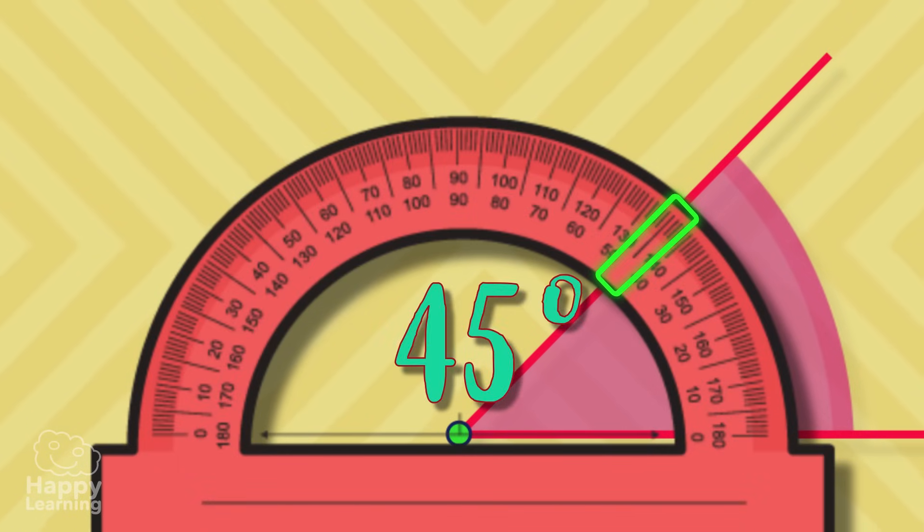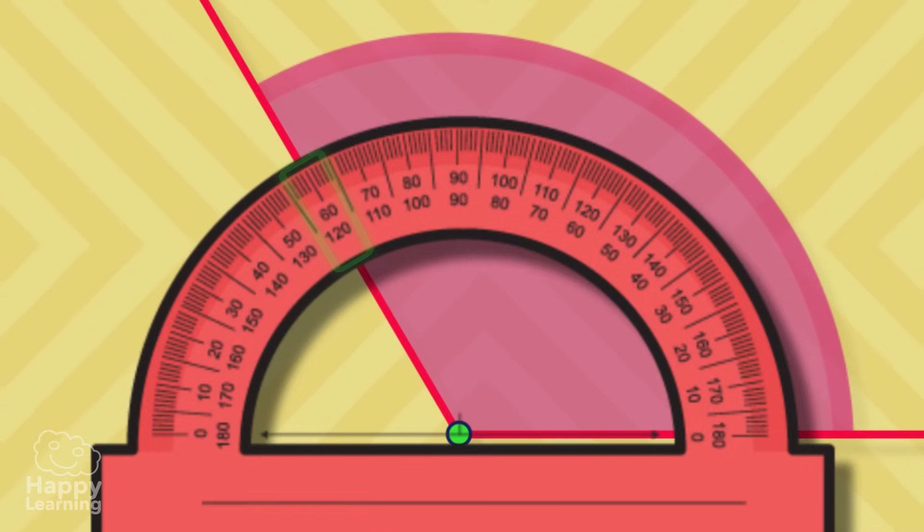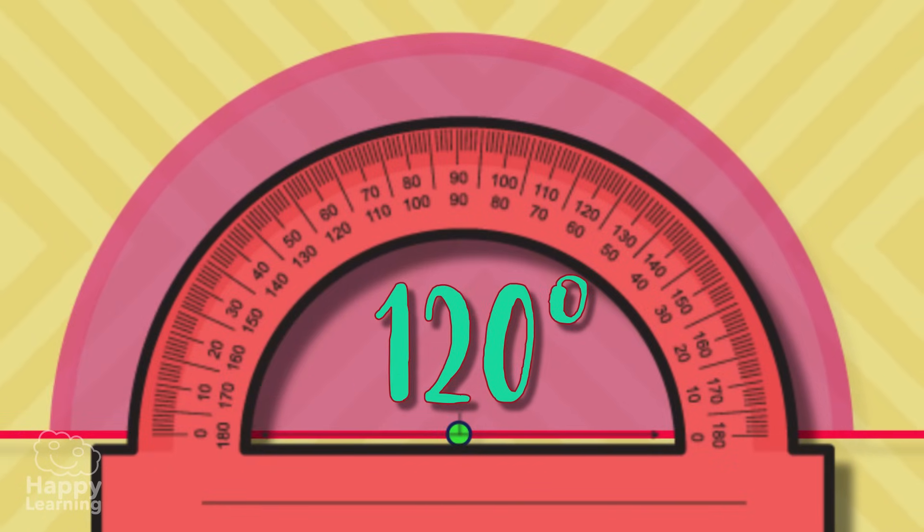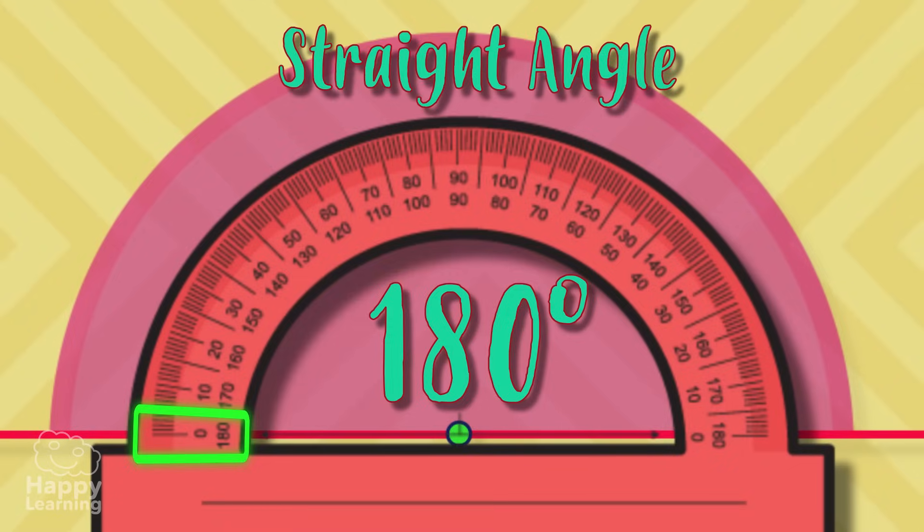And now we're going to check out how much this other angle measures. 120 degrees. Of course it's an obtuse angle because it measures more than 90 degrees. Imagine that instead of being 120 it measures 180. Do you know what this angle is called? We call it a straight angle.